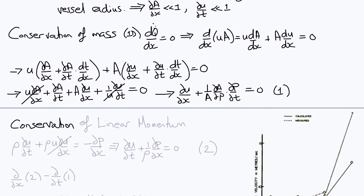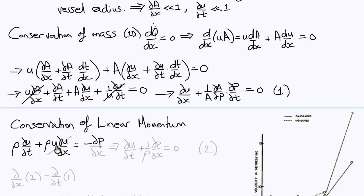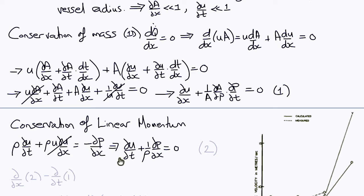Next we write conservation of linear momentum. The transient inertial term rho(del u/del t) plus the convective inertial term rho u(del u/del x) equals the pressure gradient minus del p/del x. Our linearizing assumption allows us to ignore the small convective term, leaving del u/del t plus (1/rho)(del p/del x) equals zero — this is equation two.